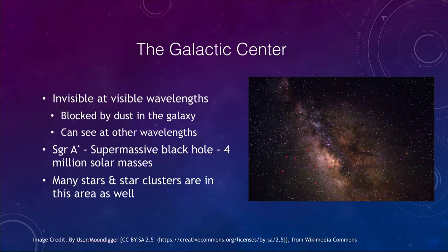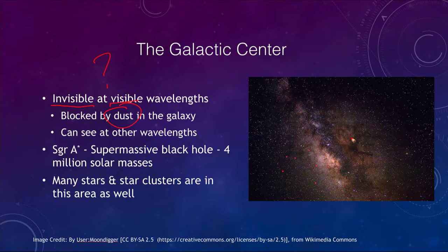Now let's take a look at our galactic center. First, it is invisible at visible wavelengths — visible light does not penetrate from the center of our galaxy to reach us here on Earth. That is because of large amounts of dust within the galaxy which blocks visible light. Even though the center of our galaxy is located in a certain part of the sky, we can't see it with visible light. Even the most powerful telescope won't show you anything there — it would be incredibly bright if it were able to be seen.